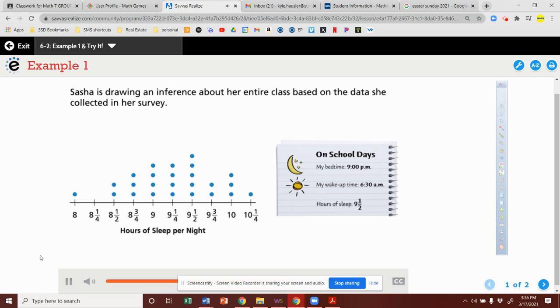Sasha is drawing an inference about her entire class based on the data she collected in her survey. Her data shows that she gets about the same amount of sleep as most of the students in her class.